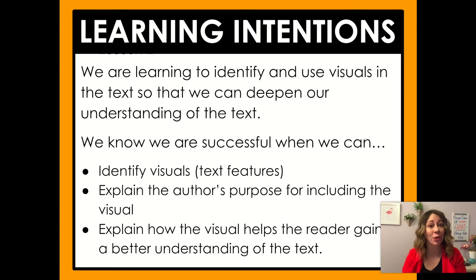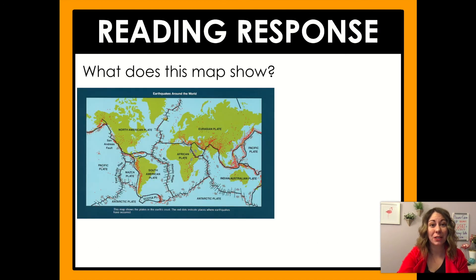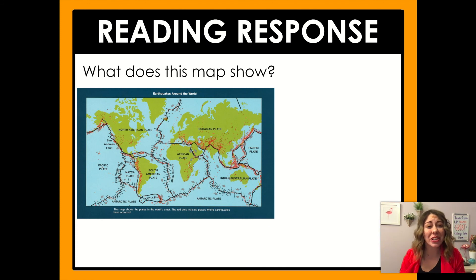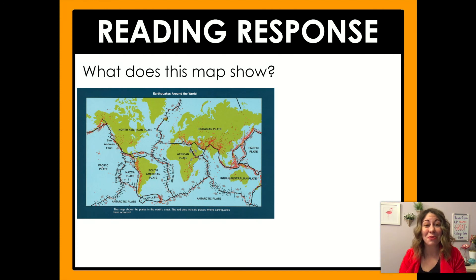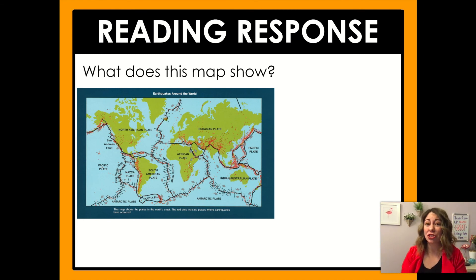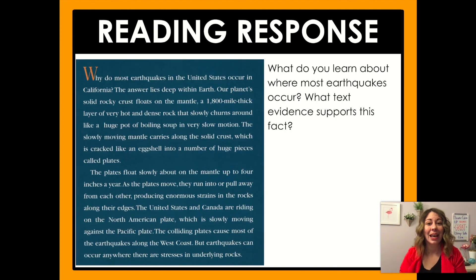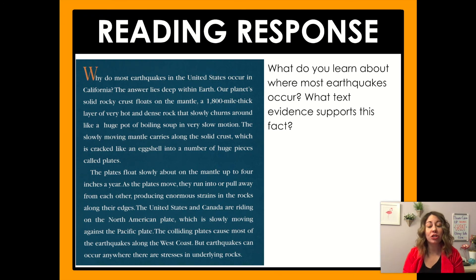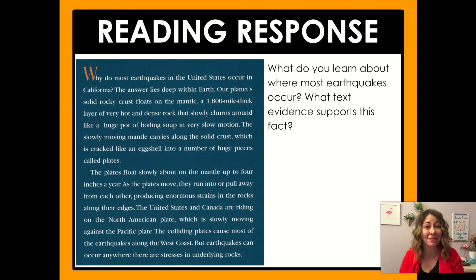Now you're ready for your reading response — I'm really going to push you today. You have a two-part reading response. First, answer this question: what does this map show? If you paid careful attention to the video, you'll already know the answer — it would be a good idea to pause and rewind to where we discussed this map. Be sure to answer in complete sentences. Second question: what do you learn about where most earthquakes occur, and what text evidence supports this fact? Answer that in a complete sentence, then highlight or underline in the text your text evidence to support it.